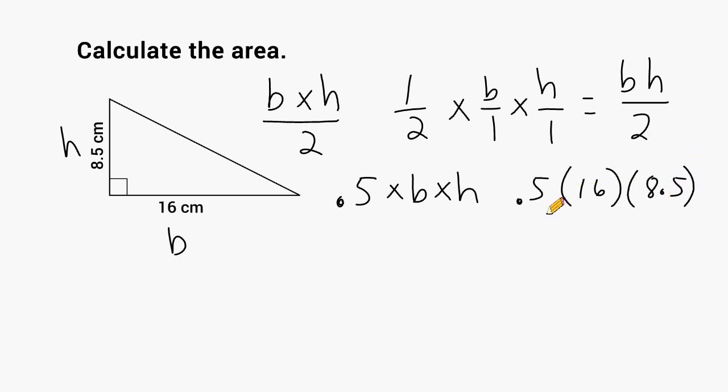Now, whenever you multiply anything by 0.5, it is the same thing as taking half of that number. So I can read 0.5 times 16 as taking half of 16, and half of 16 is equal to 8. So we can take 8 and multiply that by 8 and a half.